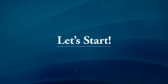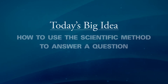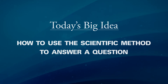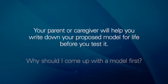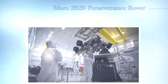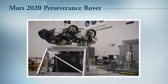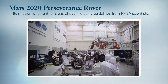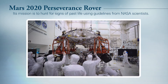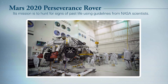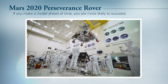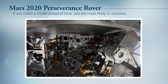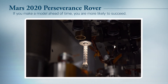All right, let's start. Students, the big idea for today's STEM activity is to use the scientific method to develop a model of life characteristics that answers the question: what exactly makes something alive or not alive? Your parent or caregiver will help you write down your proposed model before you test it. NASA's getting ready to launch the Mars 2020 Perseverance rover. When Perseverance arrives on Mars, its job will be to hunt for signs of past life. It makes the rover better at its job if NASA scientists can tell Perseverance ahead of time what to look for. So if you make a model or list ahead of time, you — like the NASA scientists — are more likely to succeed as you hunt for signs of life in some alien soil samples that your parent or caregiver has brought to you.